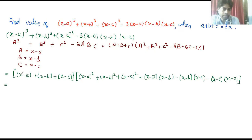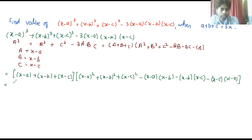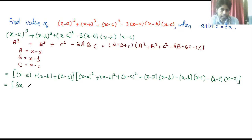Now looking at the first bracket: x plus x plus x gives us 3x, and we get minus a minus b minus c. Taking the negative sign common gives us 3x minus (a plus b plus c).